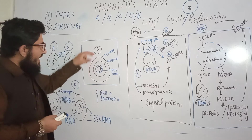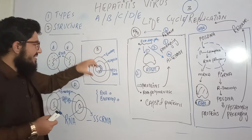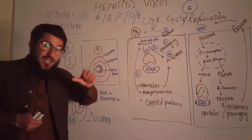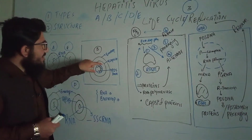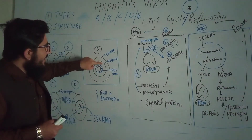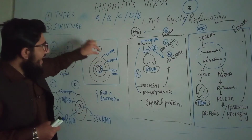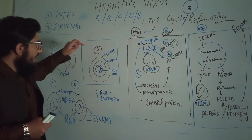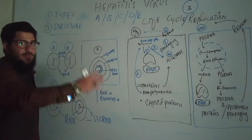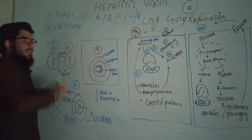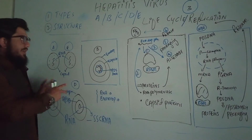Now for hepatitis B: its nucleic acid is partially double-stranded DNA. It has that DNA, plus a capsid protein layer, plus an envelope. So hepatitis B, C, and D are enveloped viruses, whereas hepatitis A and E are non-enveloped viruses.